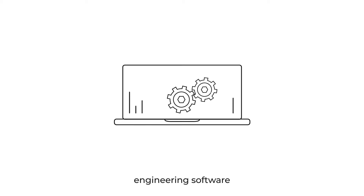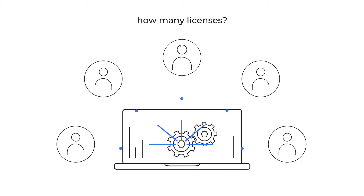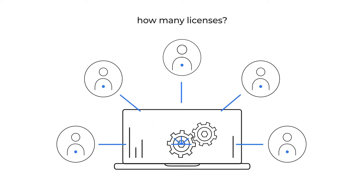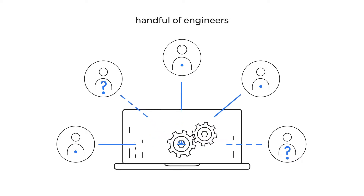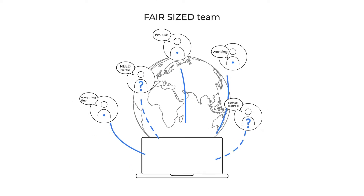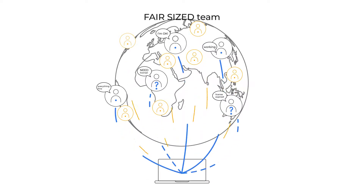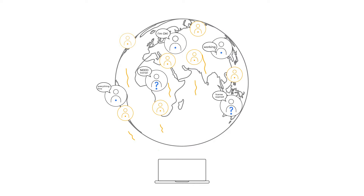Engineering software is essential to your organization, but staying on top of how many licenses you have and whether they're being used is quite a challenge. If you only had a handful of engineers, life would be simple. But with a fair-sized team using a variety of different licensed software applications, keeping track can be almost impossible.